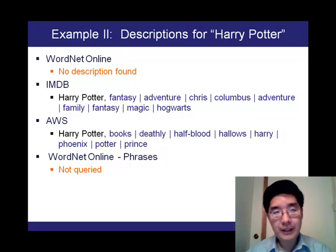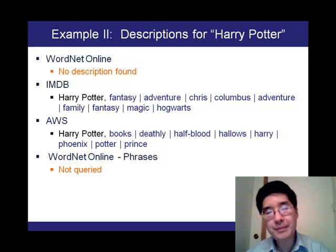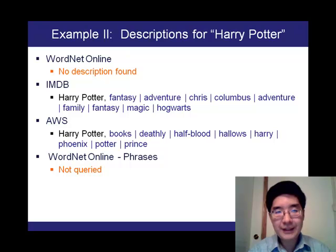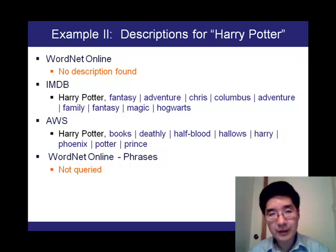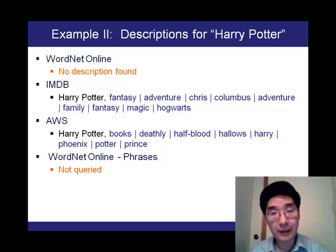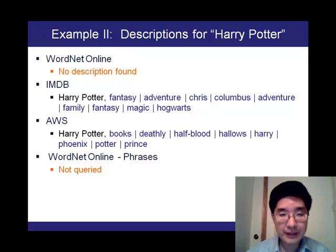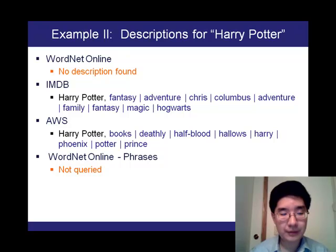If we look at descriptions for a named entity such as Harry Potter, there is no description in WordNet Online, which is a dictionary. But in IMDB, there are hits on Harry Potter dealing with the films — specifically genre keywords. Whereas in AWS, some of these deal with actual books: Deathly Hallows, Order of the Phoenix, Half-Blood Prince, and so on.